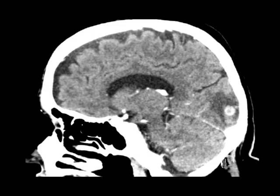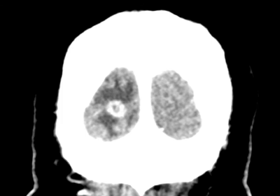Lung cancer is the most common source of intracranial metastasis. These commonly are located at the gray-white matter junction in the brain, and about half of these can be solitary.